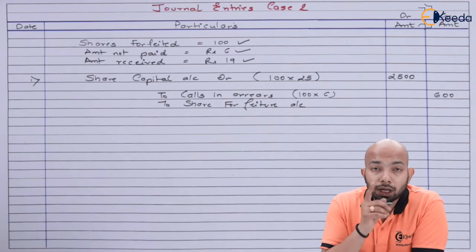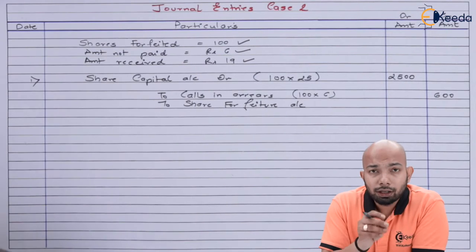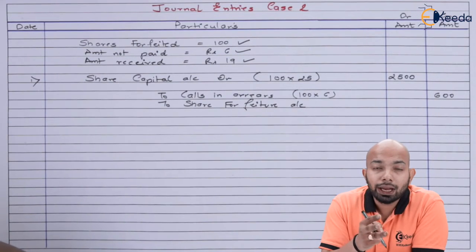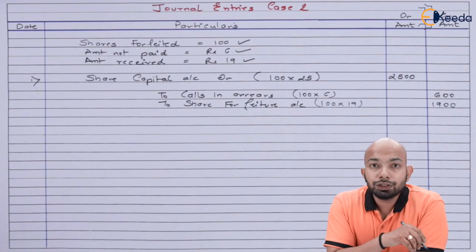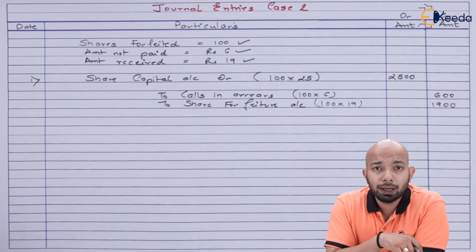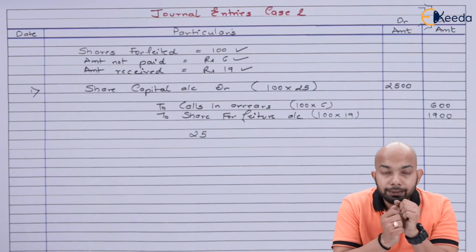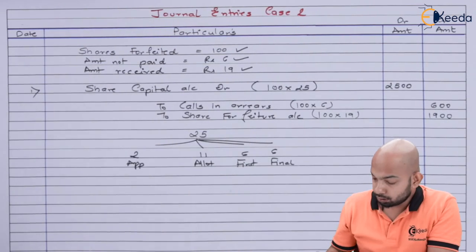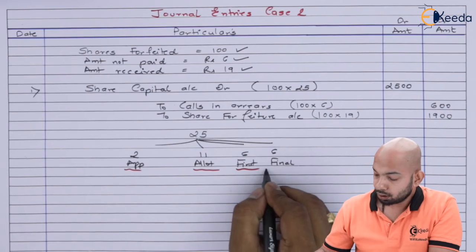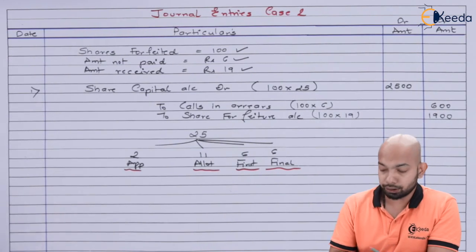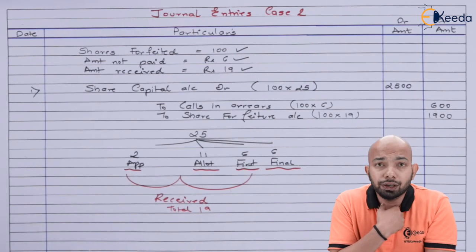The Share Forfeiture Account is credited with the amount already received — application, allotment, and first call were paid, totalling ₹19 per share. So Share Forfeiture Account gets 100 × ₹19 = ₹1,900. The debit side equals the credit side, confirming the entry. This marks the closure of Case 2 journal entries.